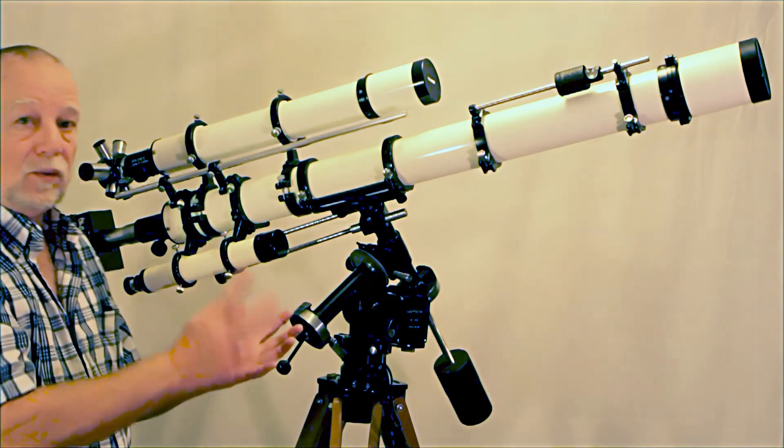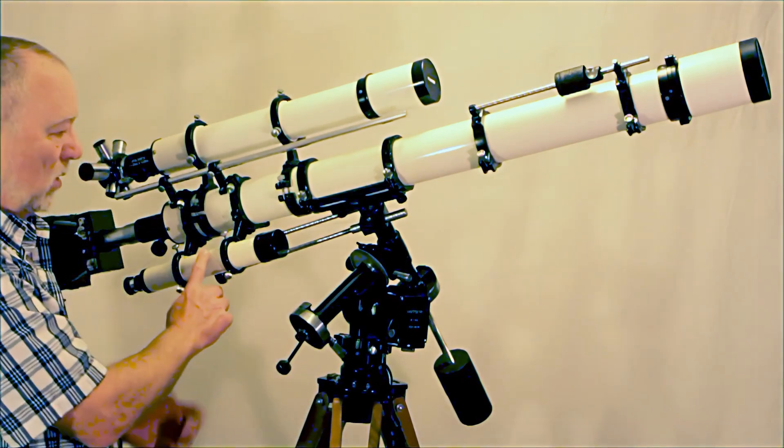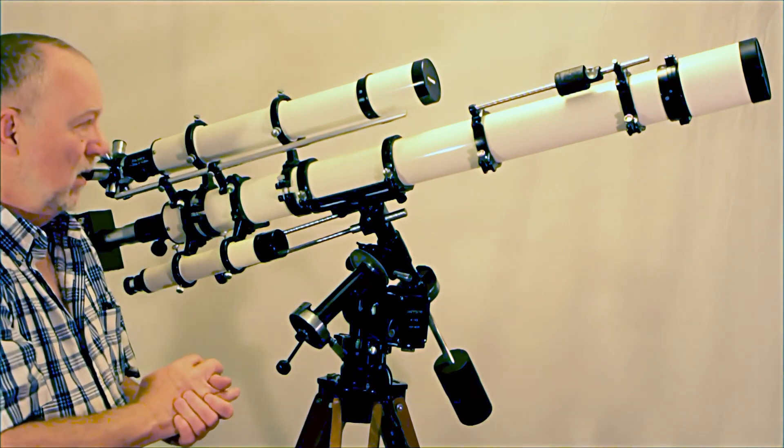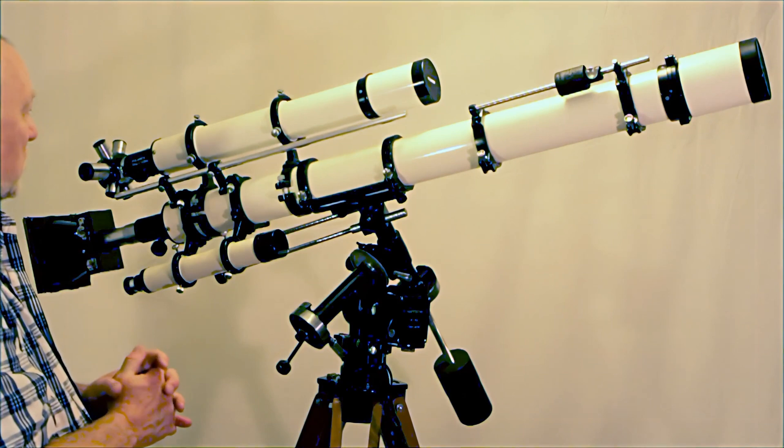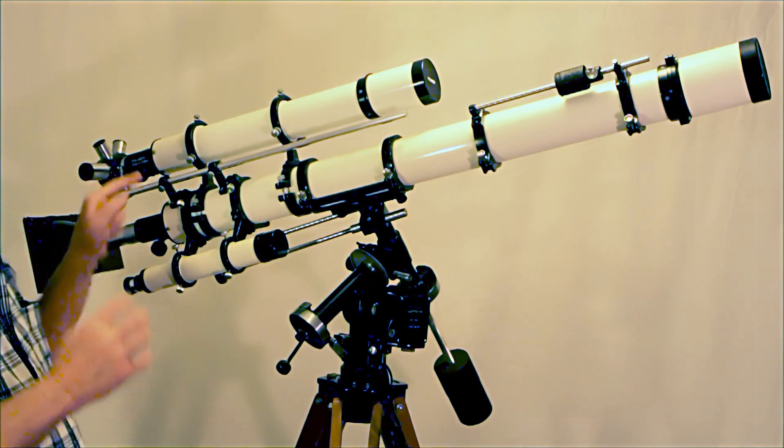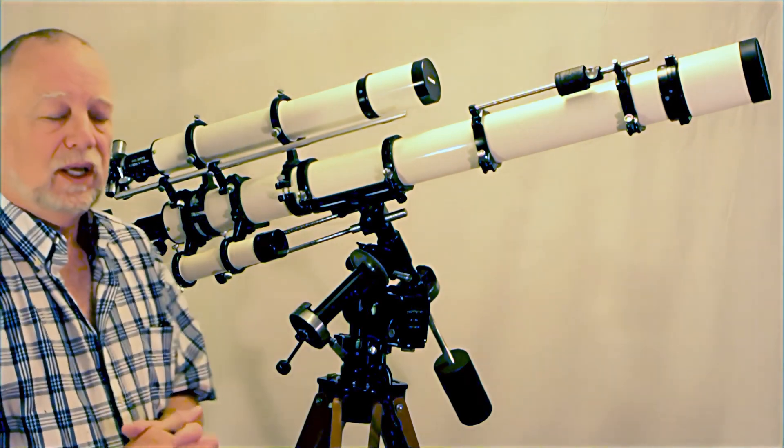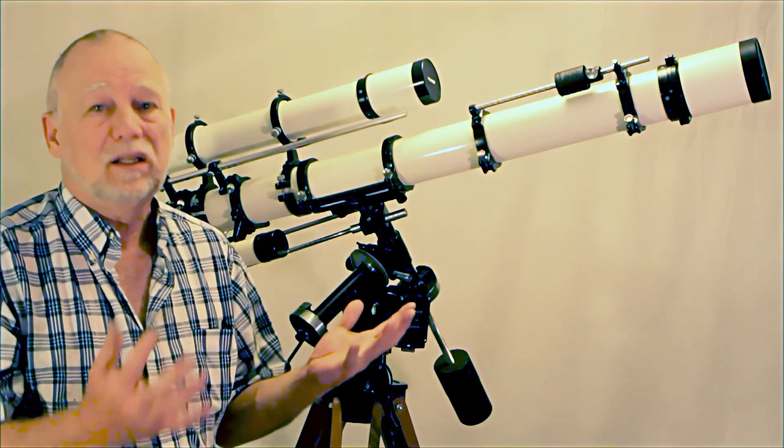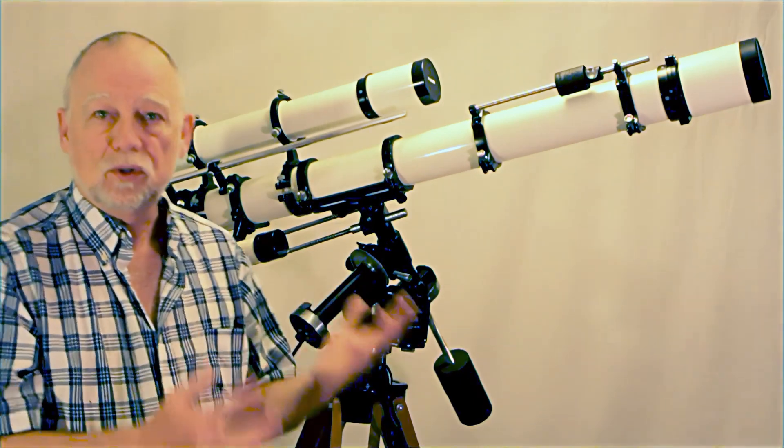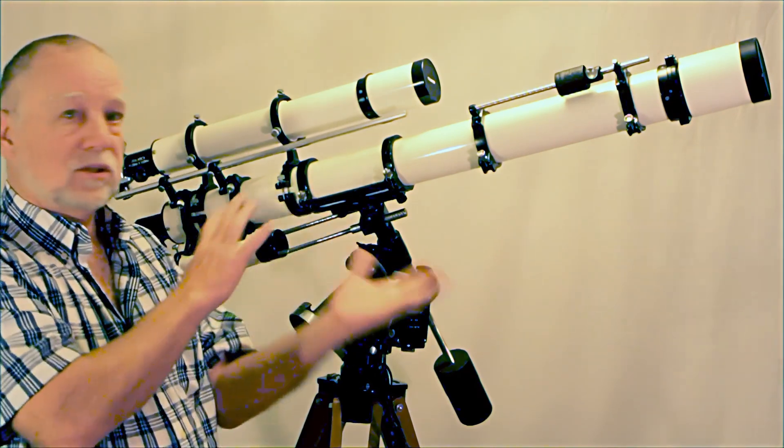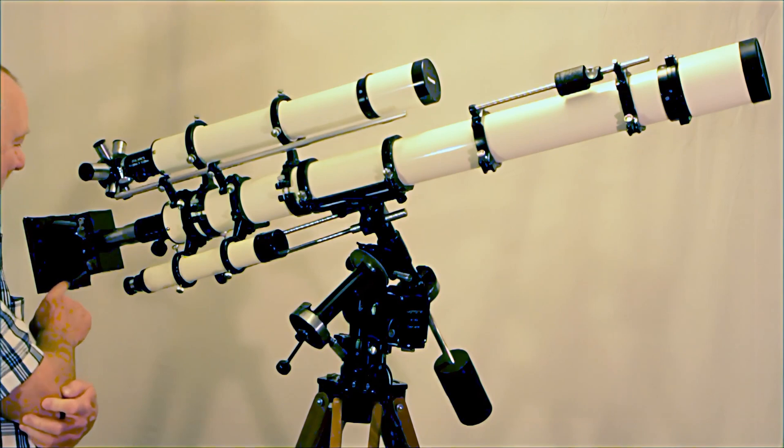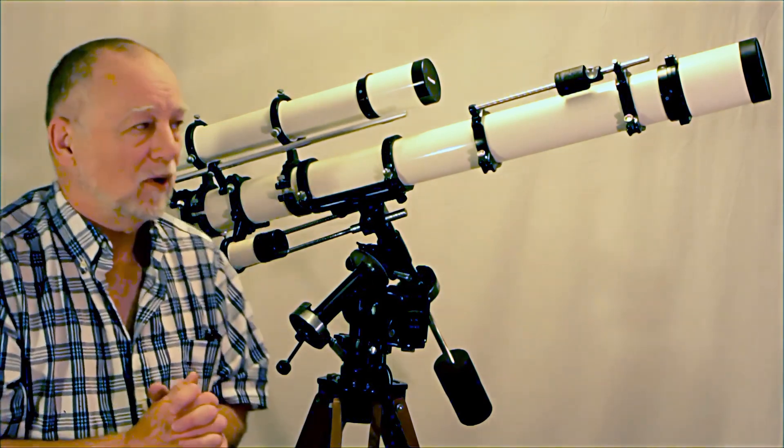This component I don't know where I got that many years ago. I got the finder scope. This component up here, the guide scope, is actually a Polarex brand. Polarex is the European version of Unitron so it's exactly the same thing. It simply was sold in Europe so it's from someplace else yet. I don't know exactly where I got the camera. I came up with it somewhere.